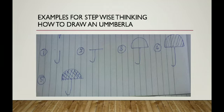Examples of stepwise thinking. See here — how to draw an umbrella. First step: I am drawing a J letter, a small J letter. That is my first step. Second step: I am drawing a line on the top. That is my second step. Third step: I am drawing a half circle on the line. See the third step.